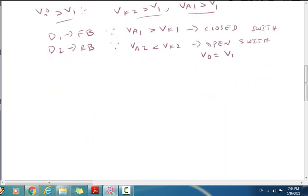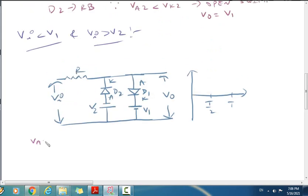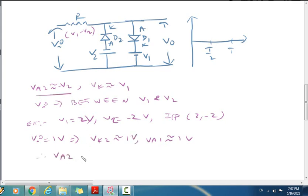The other operational mode is when input is between V1 and minus V2. Anode 2 voltage is at minus V2, cathode 1 is at V1. For better understanding, suppose V1 is 2 volts and V2 is minus 2 volts. When voltage is between 2 and minus 2 volts, suppose 1 volt. VK2 equals 1 volt approximately, VA1 is approximately 1 volt, VA2 is minus 2 volts.